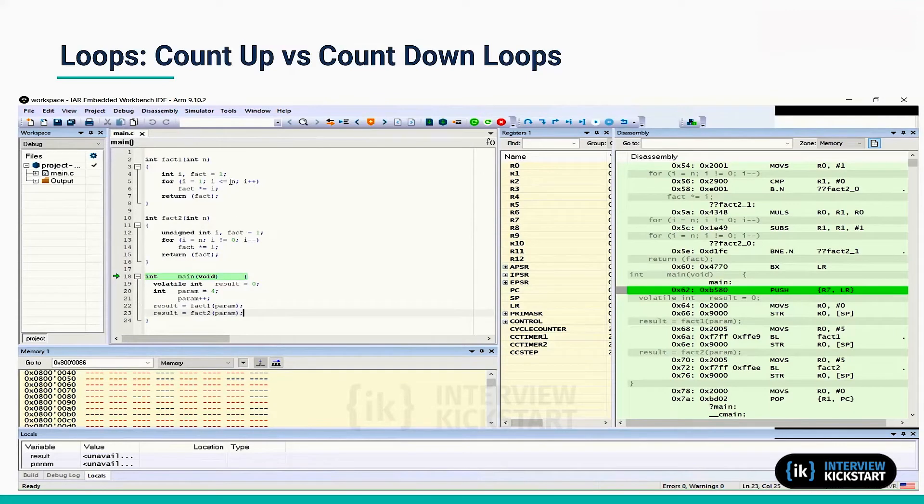fact1 is using an incrementing loop, so the termination condition is i less than or equal to n. And fact2 is using a decrementing loop where the termination is i not equal to zero.